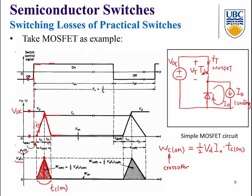Similarly, for turn-off of the switch, we also have turn-off energy WC(off), calculated as a triangle area that depends on the blocking voltage VDC and the load current IO. The turn-on and turn-off of the MOSFET are finite — voltage and current changes are not instantaneous — so these constitute switching losses burned by the switch.